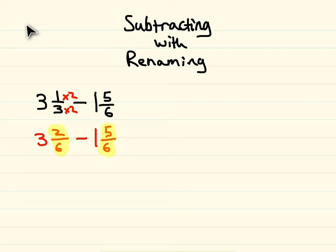So what we're going to do is we're going to borrow from the 3 and make that a 2. And since we took 1 away, we've got to kind of give the 1 back in a fractional form. And we're going to use 6/6 because our denominators are 6. So basically 2 and 6/6 is the same thing as 3.